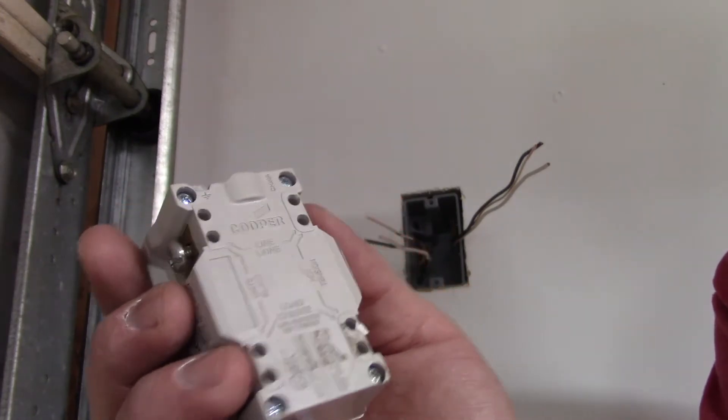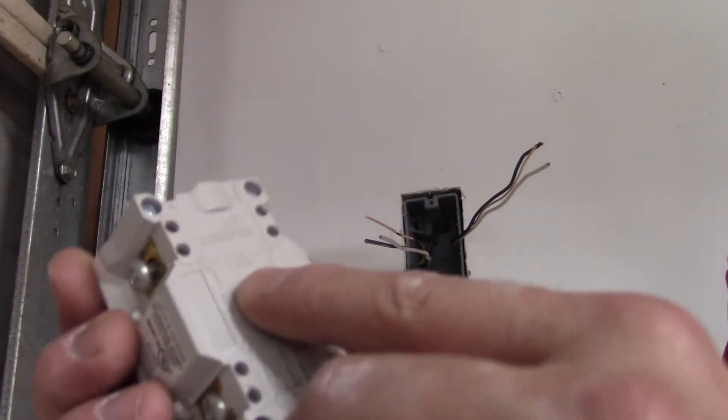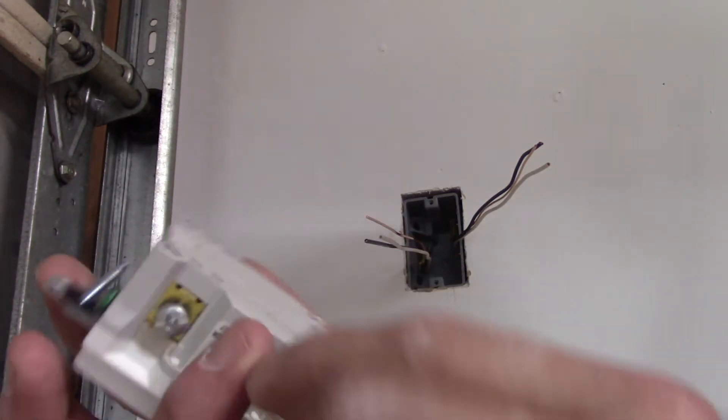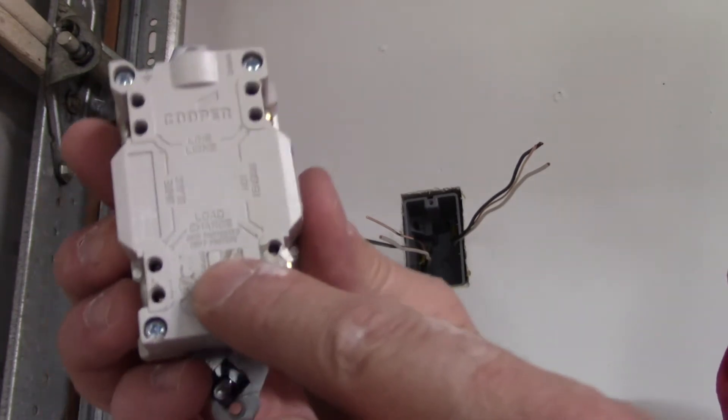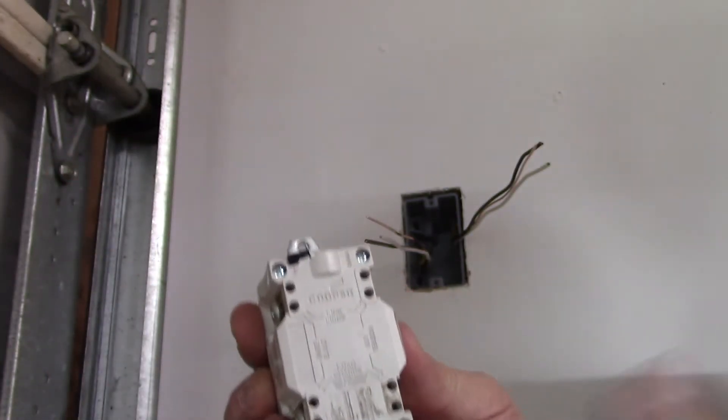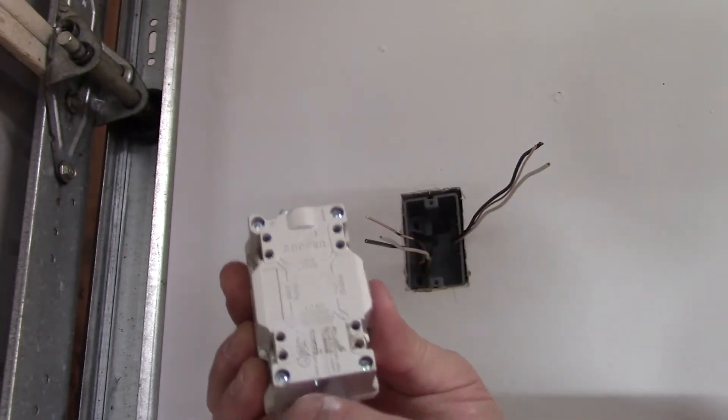On your GFCI outlet on the back, one side or one end of it is going to be marked line. This is the set of terminals that gets the power. And the other end of it is going to be marked load. And that is the circuit that continues on from this GFCI that will be protected by this outlet.